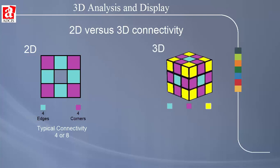When working in 3D, there are 6 faces, 12 edges, and 8 corners which can be shared and gives rise to connectivities of 6, 18, or 26.